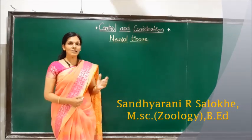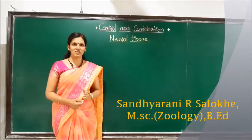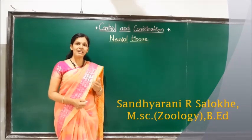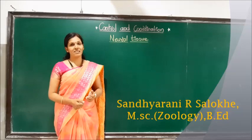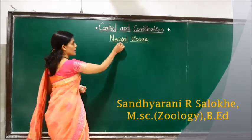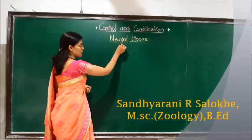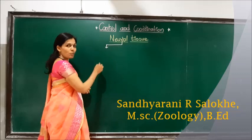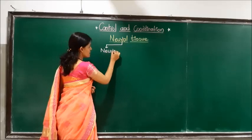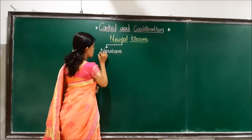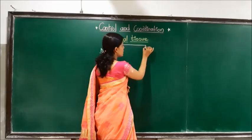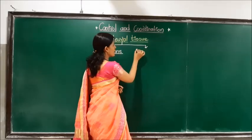Neural tissue is made up of two types of cells: neurons, also called nerve fibers, and glial cells, also called neuroglial cells.